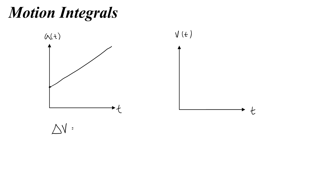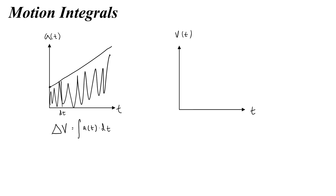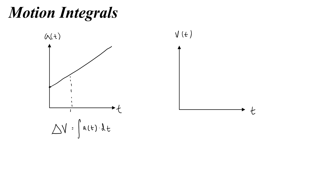If I indefinitely integrated, I would sum up the acceleration at any point — which is like the height of a line — times little dt, which is like the width of an infinitely small slice, and add it all up to get the change in velocity. That's the indefinite integral, but we are not interested in the indefinite integral. We want the definite integral, which means I want to know from some time t1 to t2 how much area is there between the function and the x-axis.